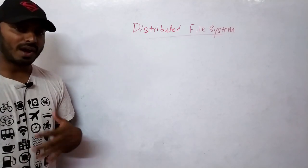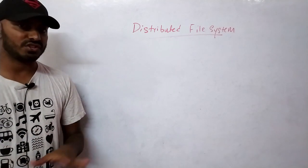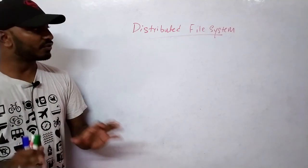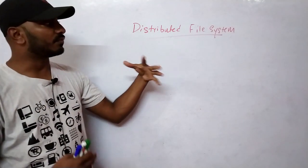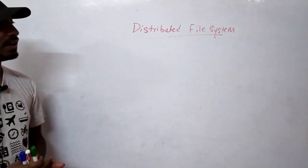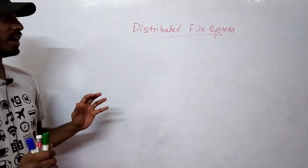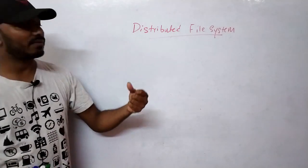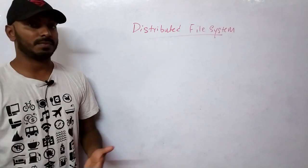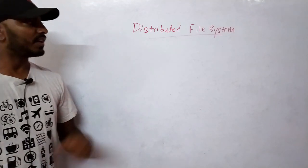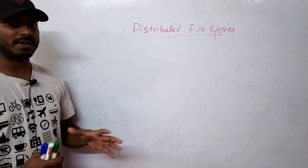The file system also handles directory structures and naming conventions. We don't need to understand its internal workings in depth, just a little bit for context. Now let's look at why we need a distributed file system and how it works. There are many distributed file systems, and I'll take one example to explain.